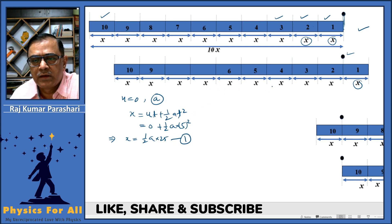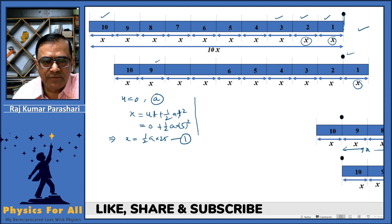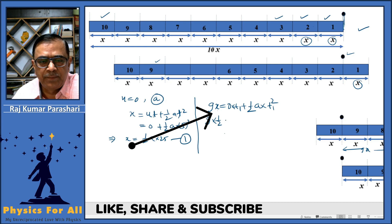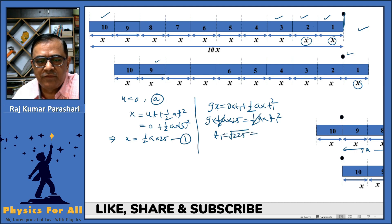Now as the train moves, bogeys keep crossing the observer. By the time the ninth bogey crosses the observer, the distance covered by the train will be equals to 9x, and hence the equation should be given by 9x equals zero into t1 plus half a is to t1 squared. Now substitute this value of X over here. So this is 9 multiplied by half a is to 25, and this equals half a into t1 squared. Half a and half a will cancel, and t1 equals square root of 225, which is equals to 15 seconds. This is the time taken by the train as the ninth bogey crosses the observer.